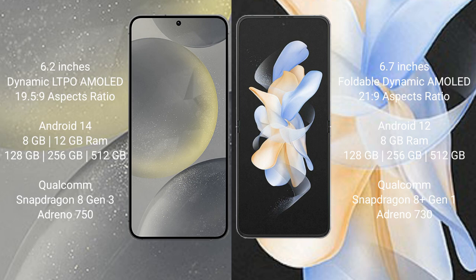The Samsung S24 runs on the Android 14 operating system, while the Samsung Galaxy Z Flip 4 runs on Android 12. The Samsung Galaxy S24 comes with 8GB or 12GB RAM and 128GB, 256GB, or 512GB internal storage.